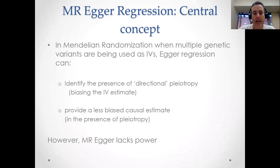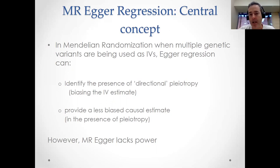The first is that it can identify the presence of what's called directional pleiotropy in our data. By directional pleiotropy, I mean horizontal pleiotropy that biases the IV estimate from the analysis. It's possible to have horizontal pleiotropy in your dataset where the different pleiotropic SNPs cancel each other out, so your overall estimate is actually unbiased. That would be non-directional pleiotropy.